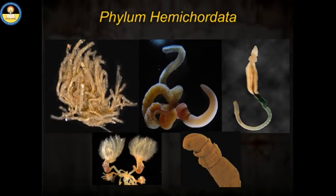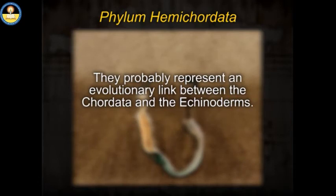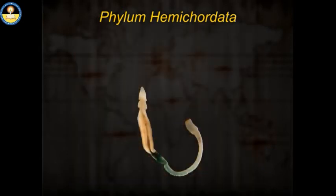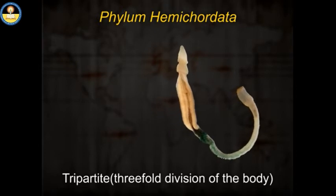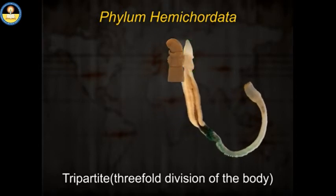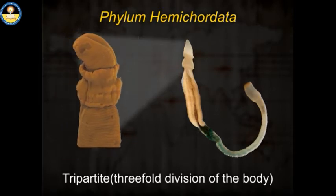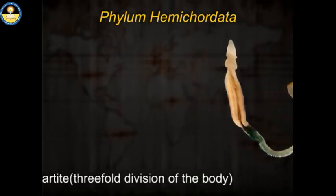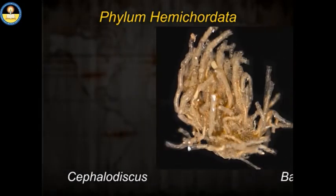The hemichordates are soft-bodied, worm-like marine organisms which are often found in U-shaped burrows on sandy or muddy sea bottoms. They probably represent an evolutionary link between the Chordata and the Echinoderms. Hemichordates are distinguished by a tripartite — that is, a three-fold — division of the body. At the forward end is a pre-oral lobe, behind this is a collar, and the last part is a trunk. Examples: Balanoglossus (acorn worm or tongue worm) and Cephalodiscus.